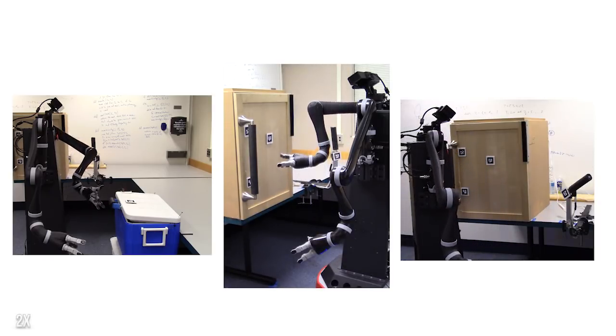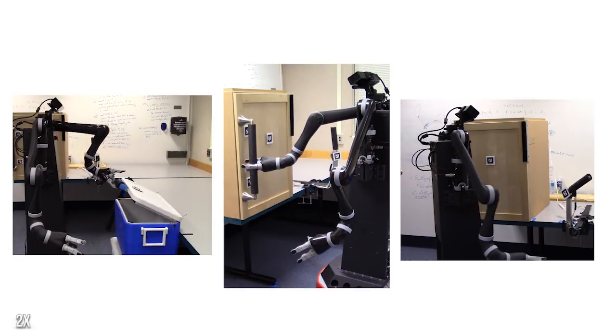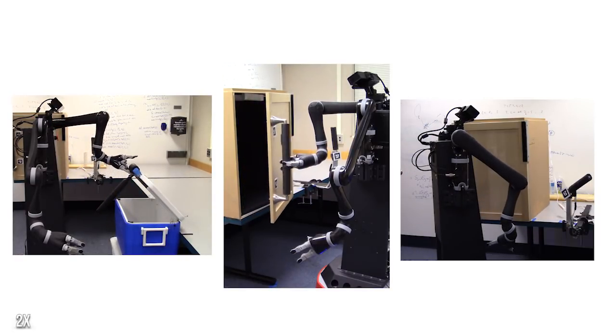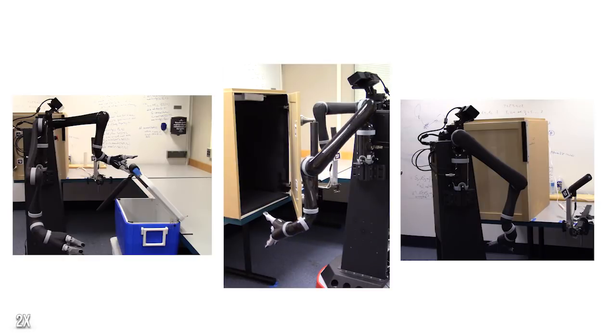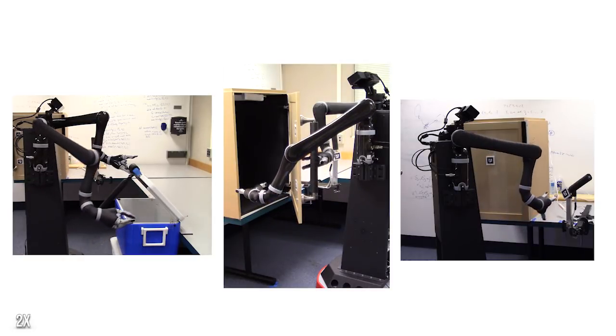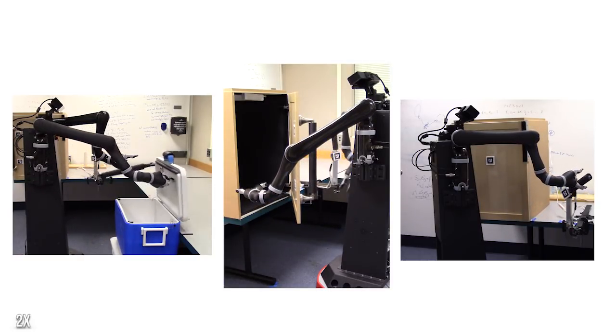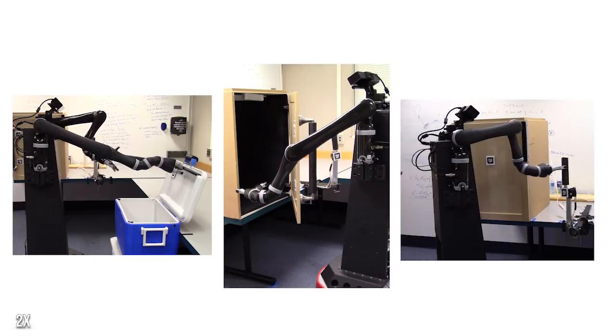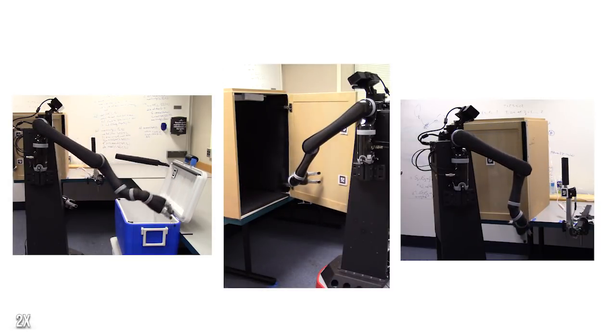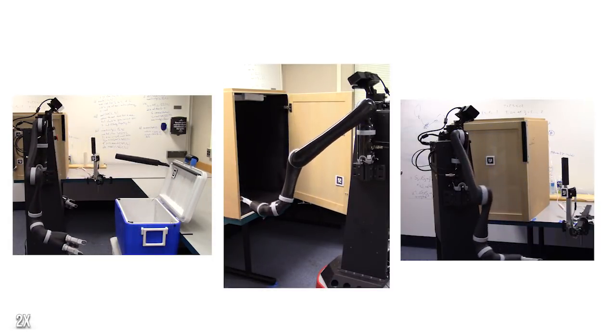She was given skills to move to, open, and close the cupboard and the cooler. Opening and closing required the use of both of her grippers. She was also given skills for turning the switch to the left and to the right. Doing so was possible when she was stationed at the cupboard, and its door was closed. An open door blocked access to the switch.